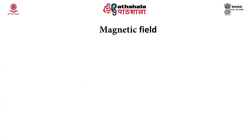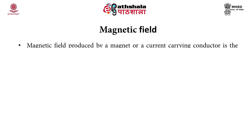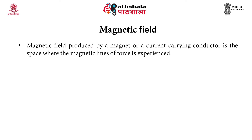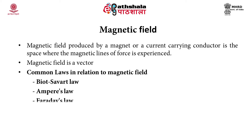Let's start with magnetic field. Magnetism is a property of material. The magnetic field produced by a magnet or a current-carrying conductor is the space where the magnetic lines of force are experienced. Magnetic field is a vector quantity which has both direction and magnitude. The common laws in relation to magnetic field are the Biot-Savart law, Ampere's law, and Faraday's law.